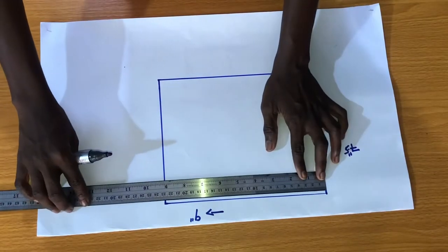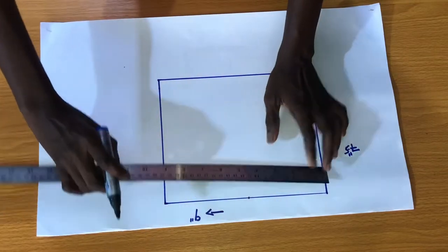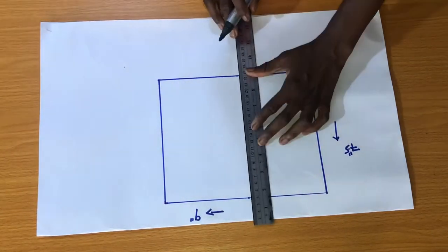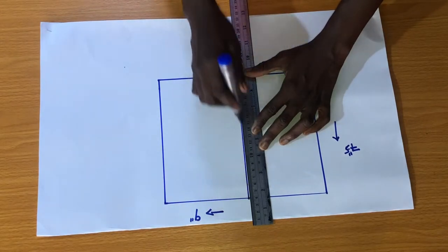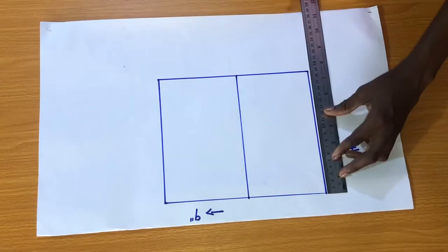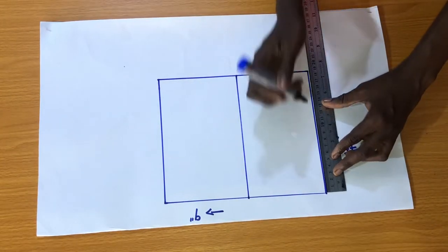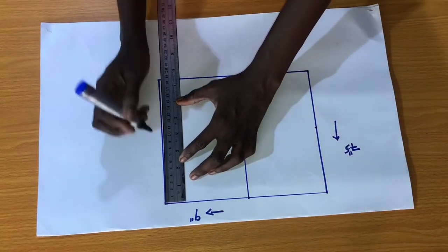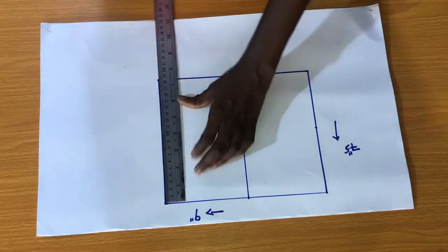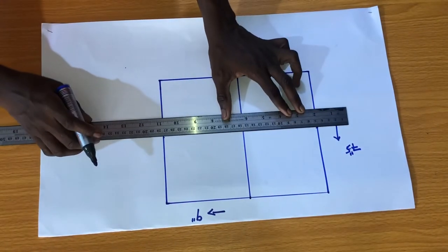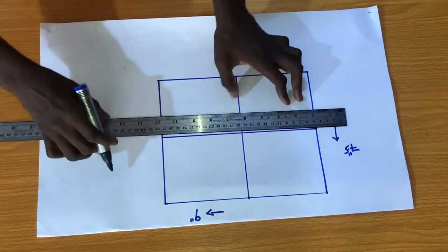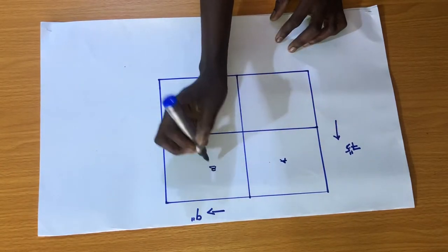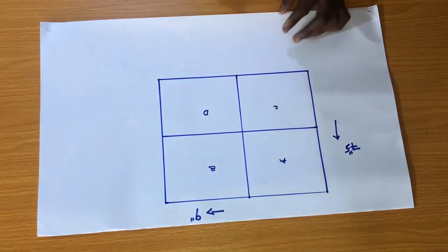The next step is to get the midpoint of the two horizontal lines by dividing nine inches into two, then you connect the points together. Now the next step is to get the midpoint of the two vertical lines by dividing 7.5 inches into two, then you connect the points together. Now we have four quadrants which we label a, b, c and d.